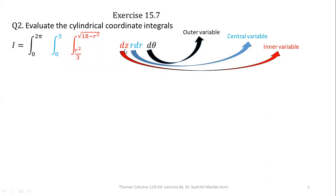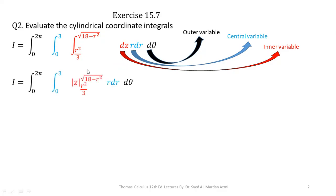The limits of Z are from R squared over 3 to the square root of 18 minus R squared. The limits of R are 0 to 3, and the limits of theta are 0 to 2π. First, we perform the integration with respect to Z. The limits of Z are from R squared over 3 to the square root of 18 minus R squared. The integration of dZ becomes Z evaluated at the given limits.